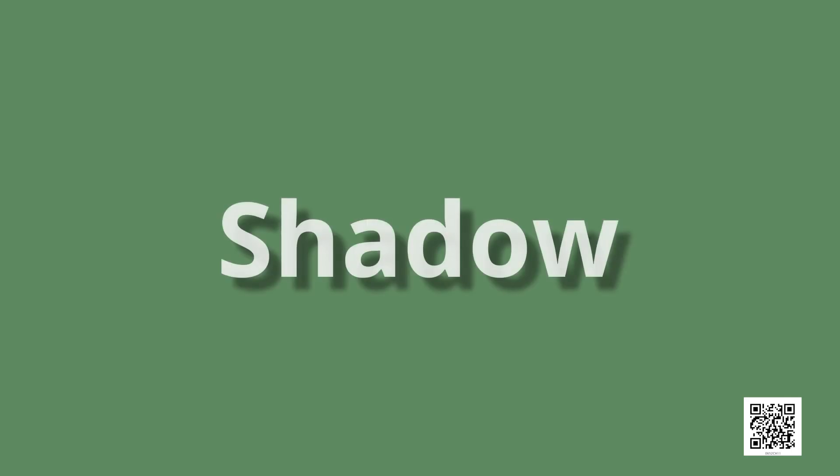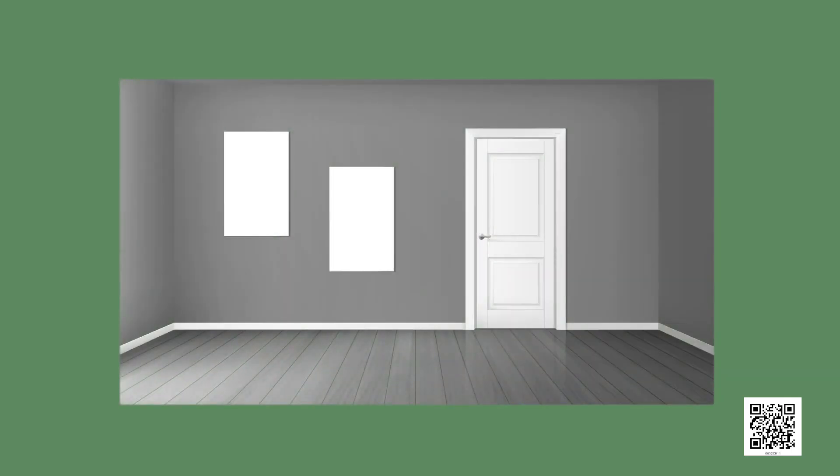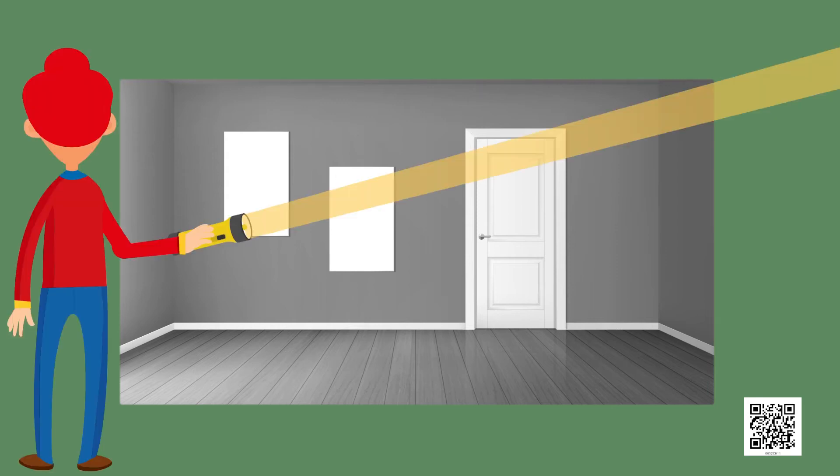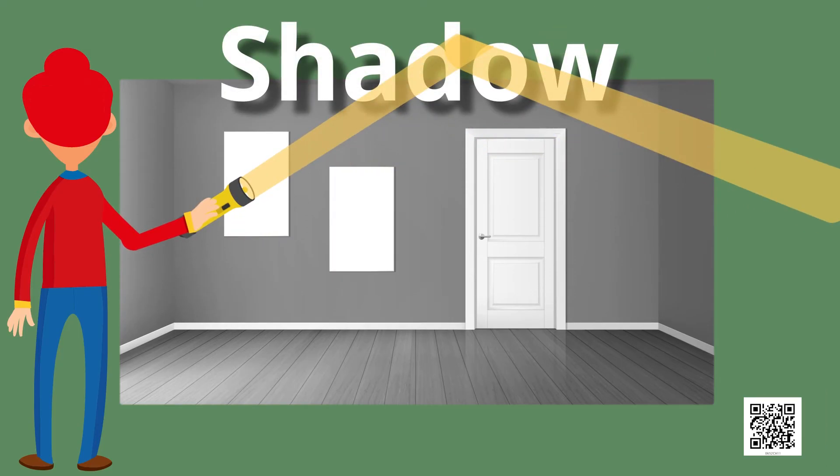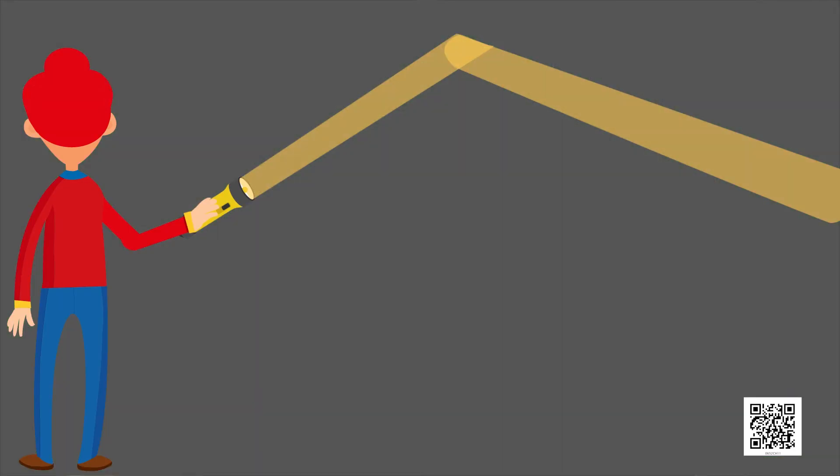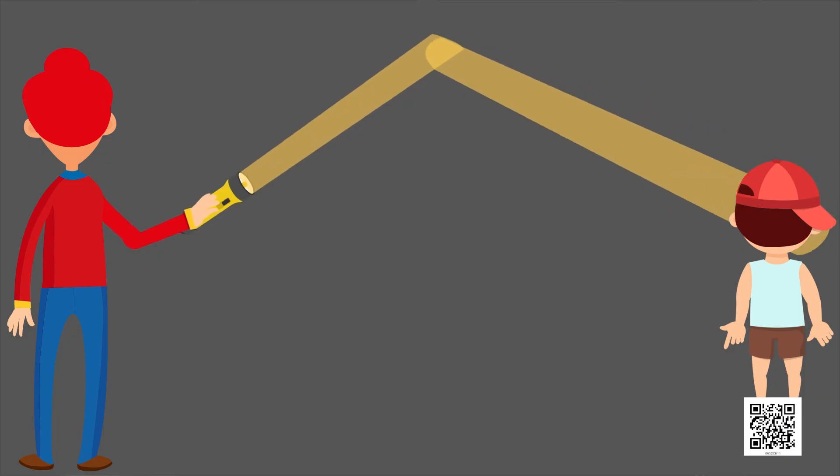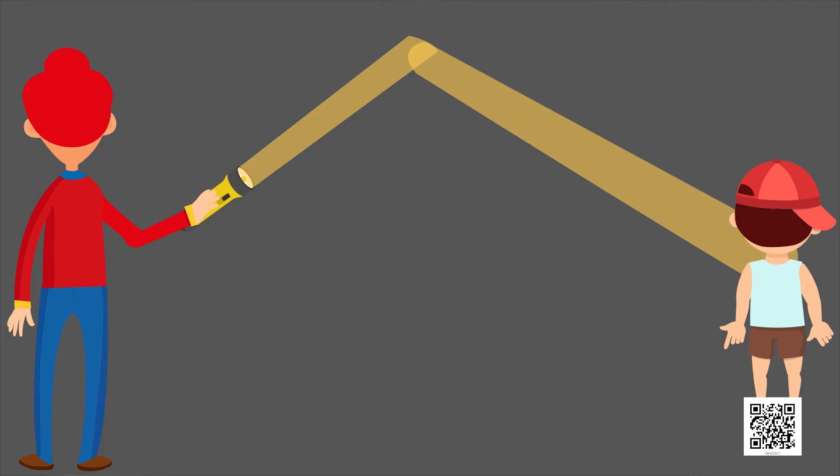Do you observe your shadow in a dark room or at night when there is no light? Do you observe a shadow when there is just a source of light and nothing else in a room? It seems we need a source of light and an opaque object to see a shadow. Is there anything else required?